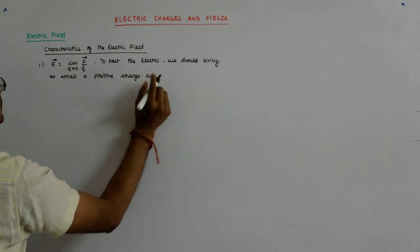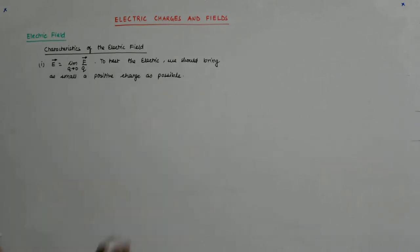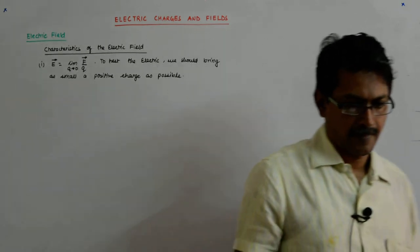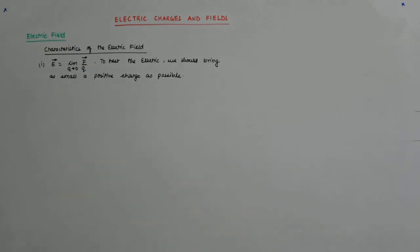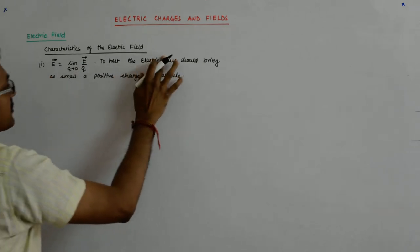As small a positive charge as possible. To test E, the electric field, theoretically speaking it should be as small as possible, tending to zero.